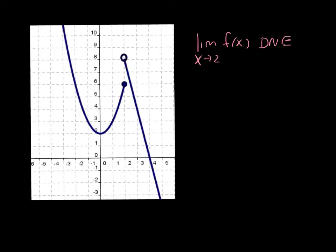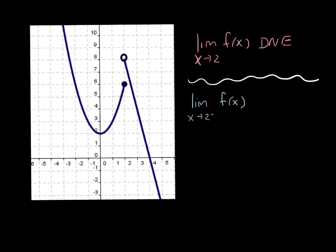But we can talk about those limits individually. We might say that the limit as x approaches 2 from the left — as x approaches 2 from the left — the limit is equal to 6. And the limit as x approaches 2 from the right would be equal to 8.